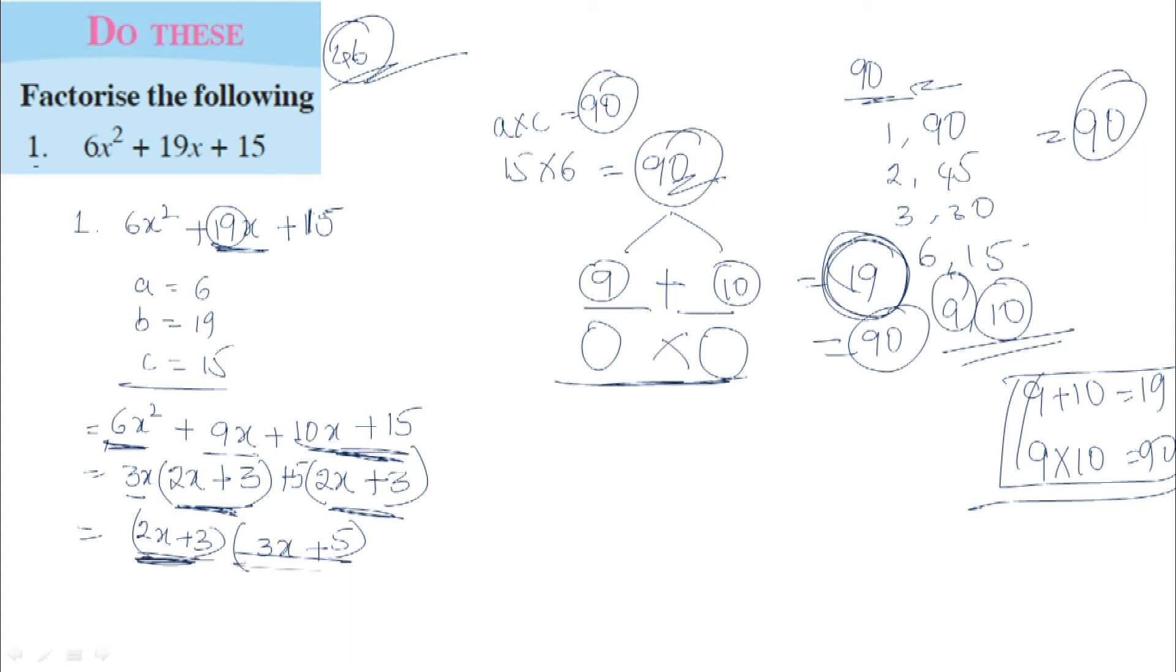So (2x + 3)(3x + 5), these two are the factors of 6x² + 19x + 15.